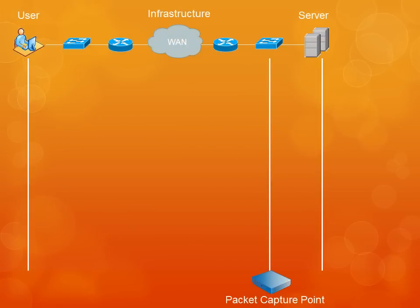In order to explain how to decode a TCP transaction and analyze the performance, let's look at an example TCP transaction. What we see here is a user connected through a network infrastructure to a web server in a data center. Our packet capture point is the switch to which the server is connected. In this example, the user is going to perform a simple web transaction.